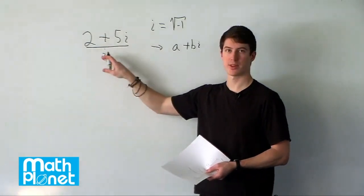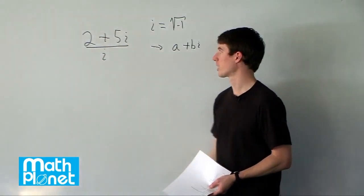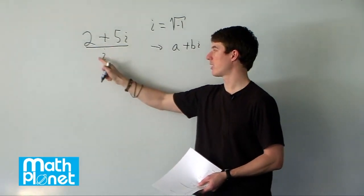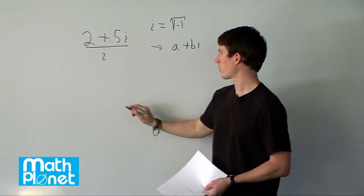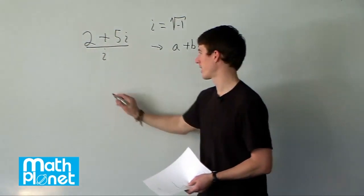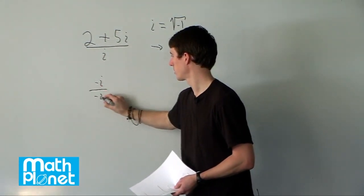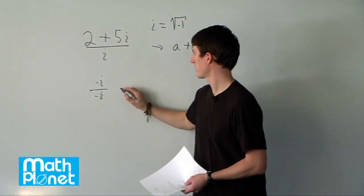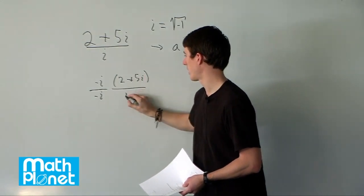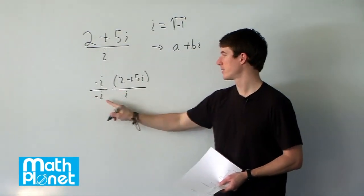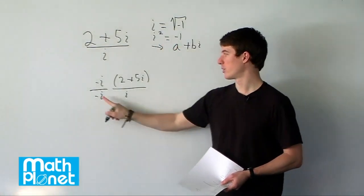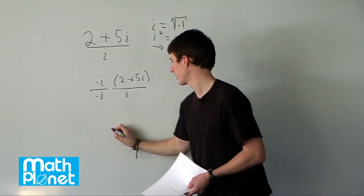It's not so hard to do that. We simply multiply the top and the bottom by the conjugate of the denominator. The conjugate of i is just negative i. So we take this expression and multiply by 1 — in this case, negative i divided by negative i. We're not changing the expression at all, just changing what it looks like. So we still have 2 plus 5i on top, and on the bottom, i times negative i gives us negative i squared. Well, i squared is just negative 1, so negative times negative 1 gives us positive 1.